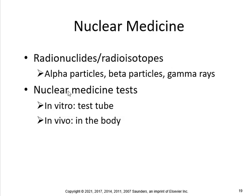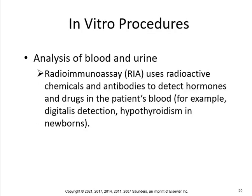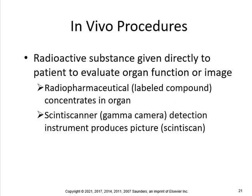Radionuclides or radioisotopes emit alpha particles, beta particles, and gamma rays. Nuclear medicine tests can be in vitro or in vivo — make sure you know the difference: in vitro means in a test tube, in vivo means in the body. The half-life of a particle is the time required to lose half of its radioactivity by disintegration. In vitro procedures include analysis of blood and urine. Radioimmunoassay (RIA) uses radioactive chemicals and antibodies to detect hormones and drugs in the patient's blood — for example, digitalis detection or hypothyroidism in newborns. A radiopharmaceutical is a labeled compound that concentrates in an organ when given directly to the patient to evaluate organ function.